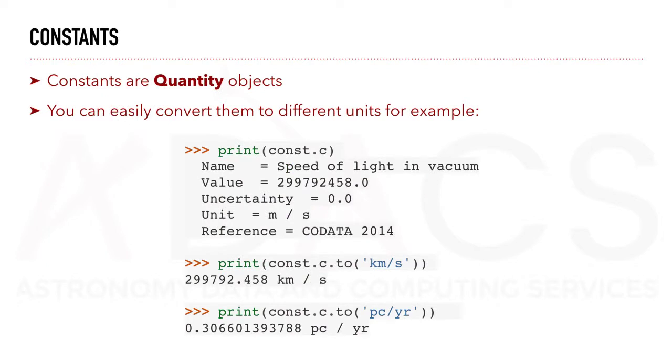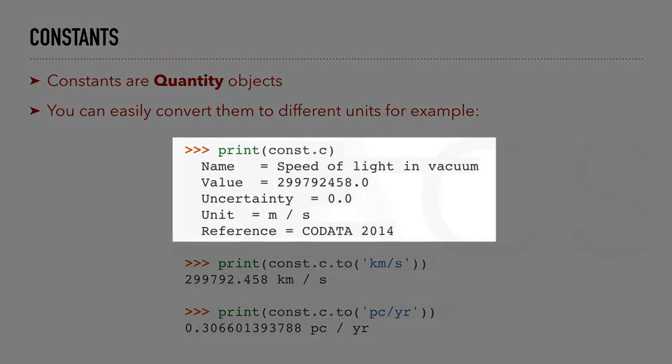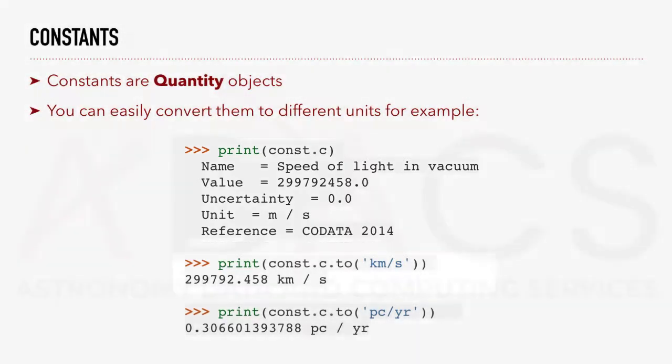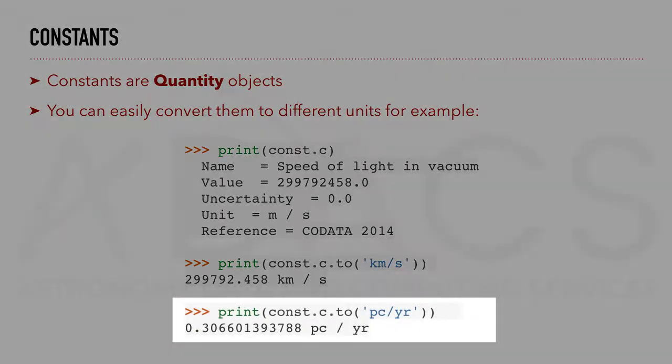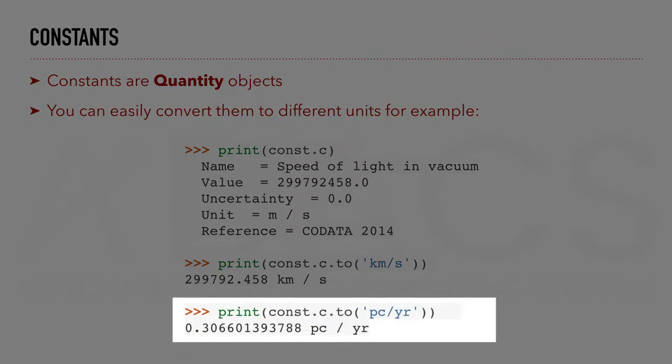As we said before, constants are quantity objects. You can easily convert them to different units. This is done using the to function specifying the target unit. For example, you can convert C, the speed of light in vacuum, to kilometers per second, and similarly, you can convert it to parsec per year.